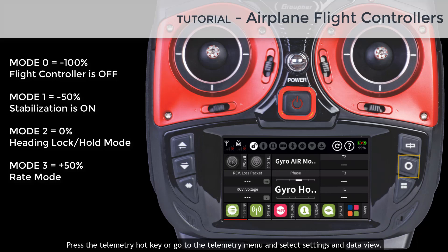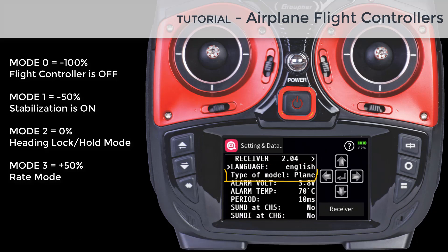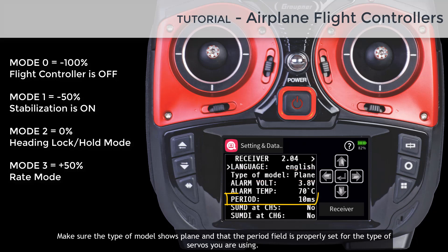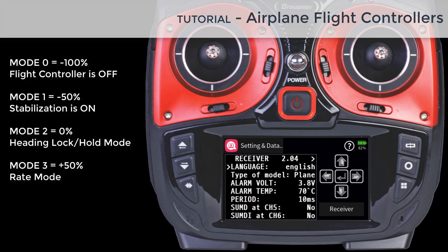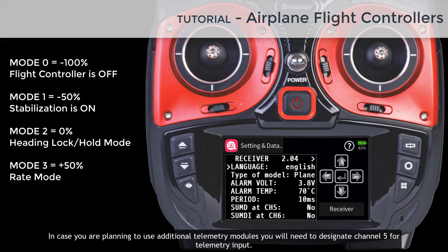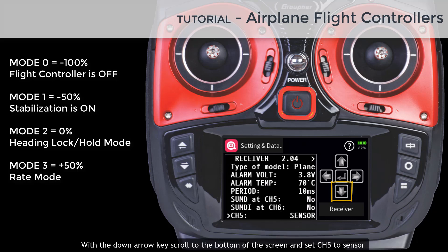Press the telemetry hot key or go to the telemetry menu and select the settings and data view. The first screen shows the current firmware version of the flight controller. Make sure the type of model shows plane and that the period field is properly set for the type of servos you are using: 10 milliseconds for digital servos and 20 milliseconds for analog servos. If you are planning to use additional telemetry modules, designate channel 5 for telemetry input and set it to sensor.